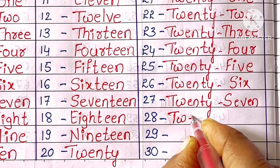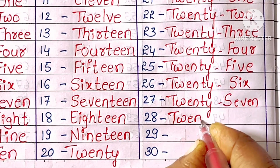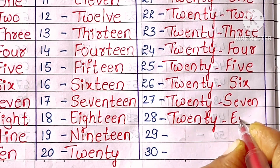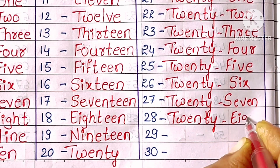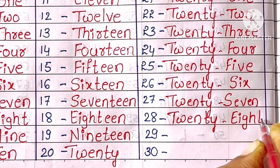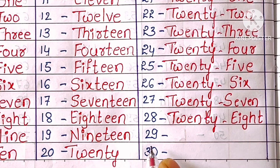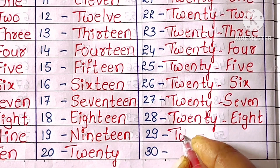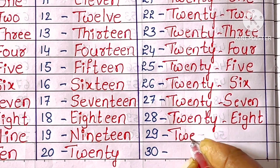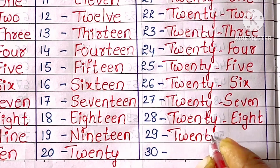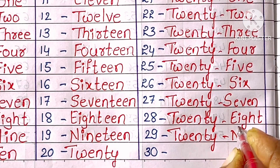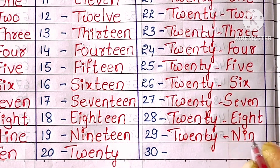28. T-W-E-N-T-Y-E-I-G-H-T. Twenty-eight. 29. T-W-E-N-T-Y-N-I-N-E. Twenty-nine.